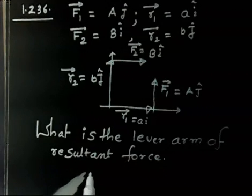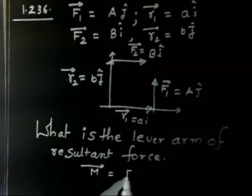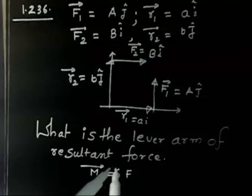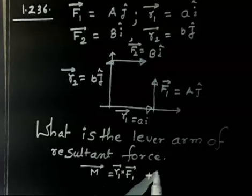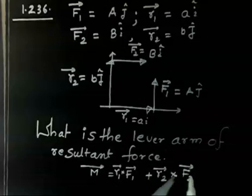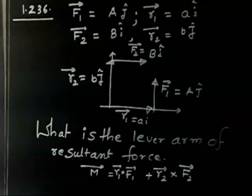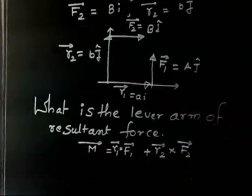So first find out the total moment. The moment vector will be R cross F: that is R1 cross F1 plus R2 cross F2. Find this total moment, then find the total force, and divide. You will get the answer.